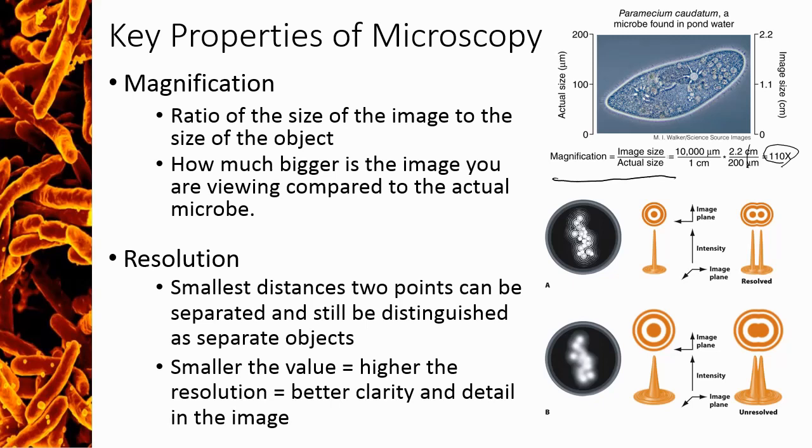A microscope has to be able to magnify an object to be large enough to view with the naked eye, but it must also have strong enough resolving power. You can see this with digital images. If you take an image with low resolution, or a low number of pixels, and you blow it up, you just get a blurry image when magnified.